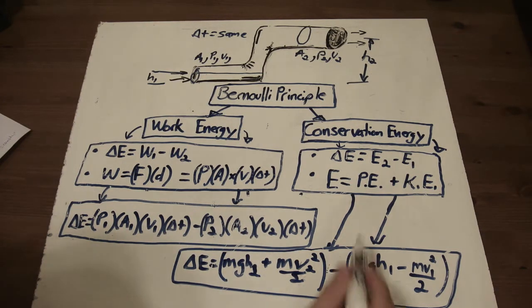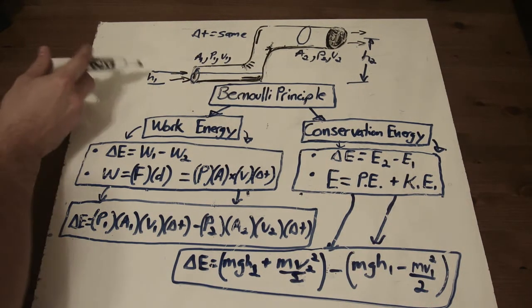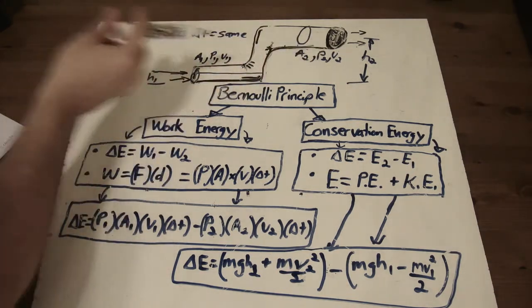The next thing I did is I looked at conservation of energy, and I just used the classic MGH for potential energy, and MV squared over 2 for kinetic energy. And that's going to correlate to your heights and your velocities for both components.